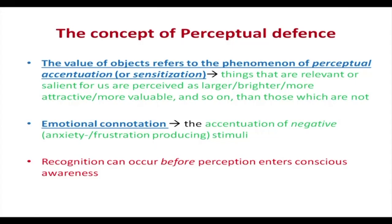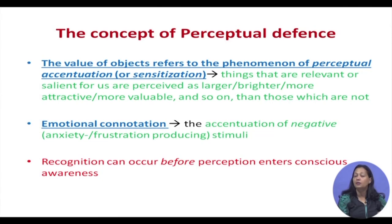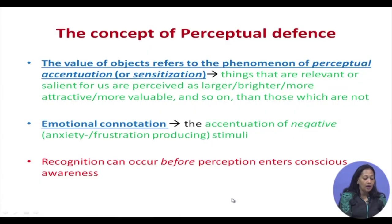Another important factor is emotional connotation — the accentuation of negative, anxiety-producing, or frustrating stimuli. If there is an emotional connotation to a stimulus, there is an accentuation of that stimulus, creating an arousal in the individual. Importantly, recognition can occur before perception enters conscious awareness. The individual is aware of the stimulus before becoming consciously aware of it — and this is what McGuinness showed through his experiment.